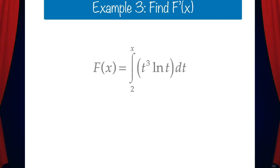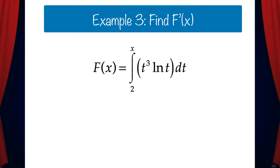Let's try another one. Find the derivative of this function. I hope you can see that we don't need to solve the integral — we can just use the shortcut. Let's replace all the t's in the integrand with x's and that's the answer. So capital F prime of x equals x cubed times ln x.